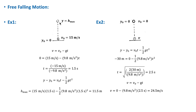We can find the time it takes the object to reach the maximum height using the kinematic equation. The object will reach the maximum height at t₁ = 1.5 seconds. Note that we took the initial y position, y₀, equal to zero at the ground.